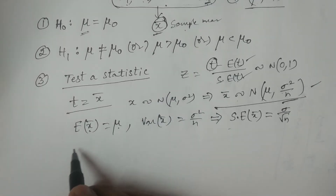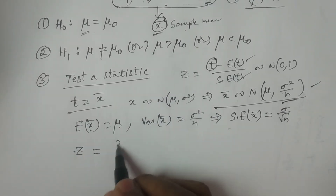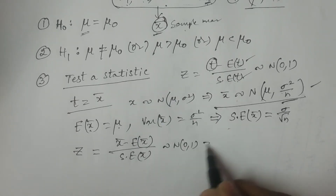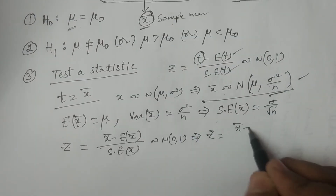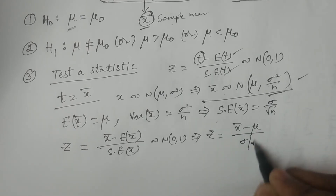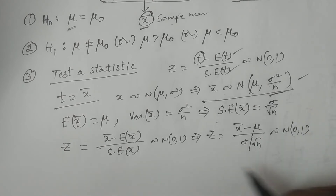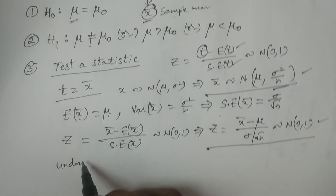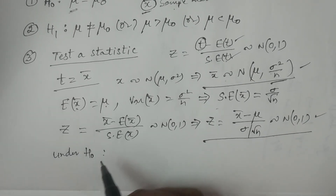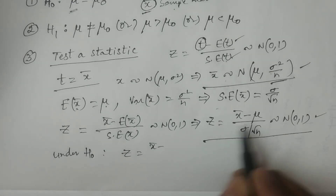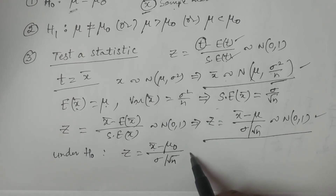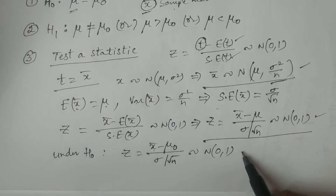Therefore, z is equal to x̄ minus expectation of x̄ divided by standard error of x̄, which follows N(0,1). This implies z equals x̄ minus mu divided by sigma by root n, which follows N(0,1). This is the test statistic. Under the null hypothesis H₀, the test statistic becomes z equals x̄ minus mu naught divided by sigma by root n, since H₀ states mu equals mu naught. This is the test statistic under H₀.